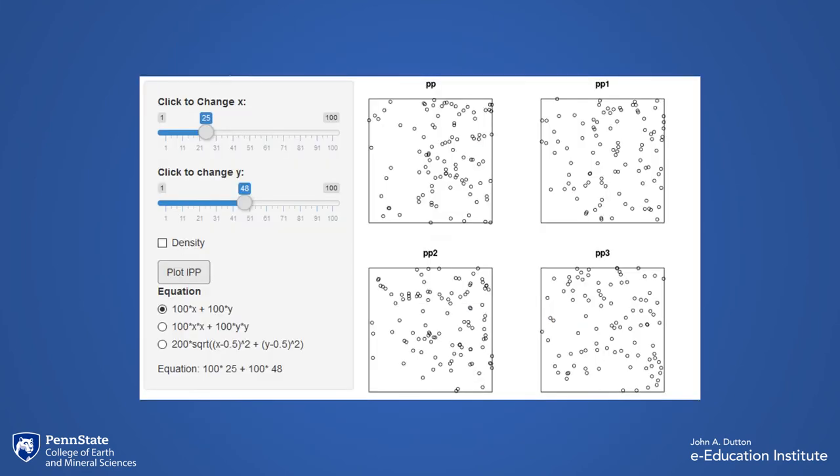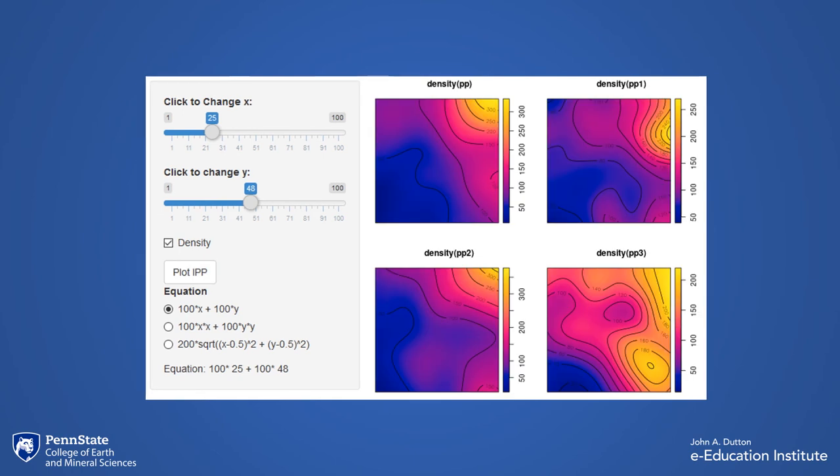This next example uses R Shiny in a geography course about epidemiology. The students use the sliders to change the parameters used to create random geographical patterns. A simple checkbox allows a student to change the view from a simple dot map to a density map.